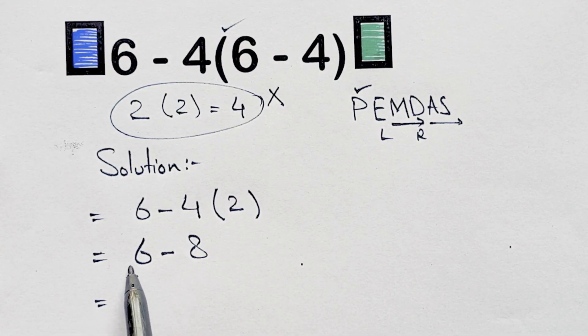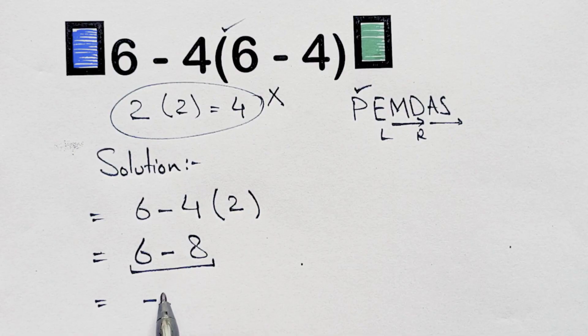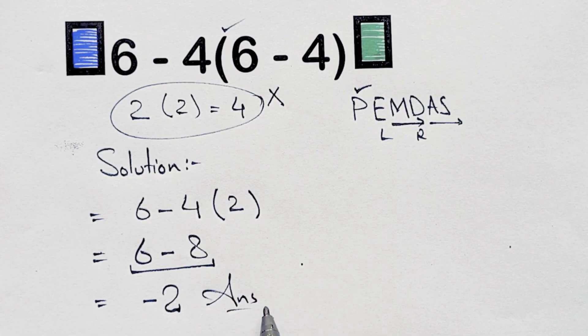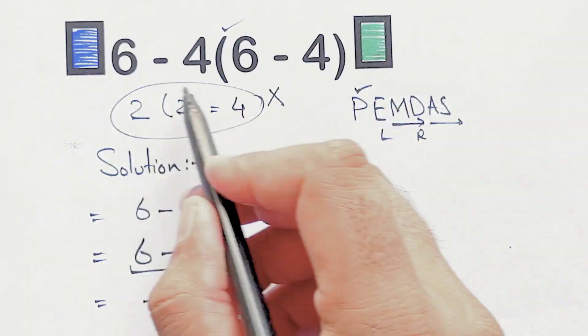We're left with six minus eight, which gives us negative two. So our final answer to this problem is just negative two. And I hope you understand this problem.